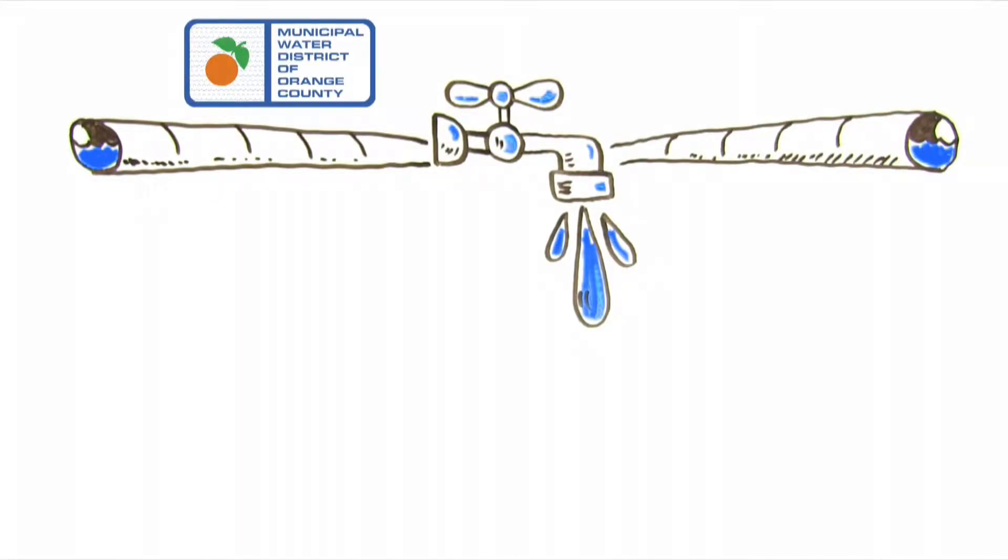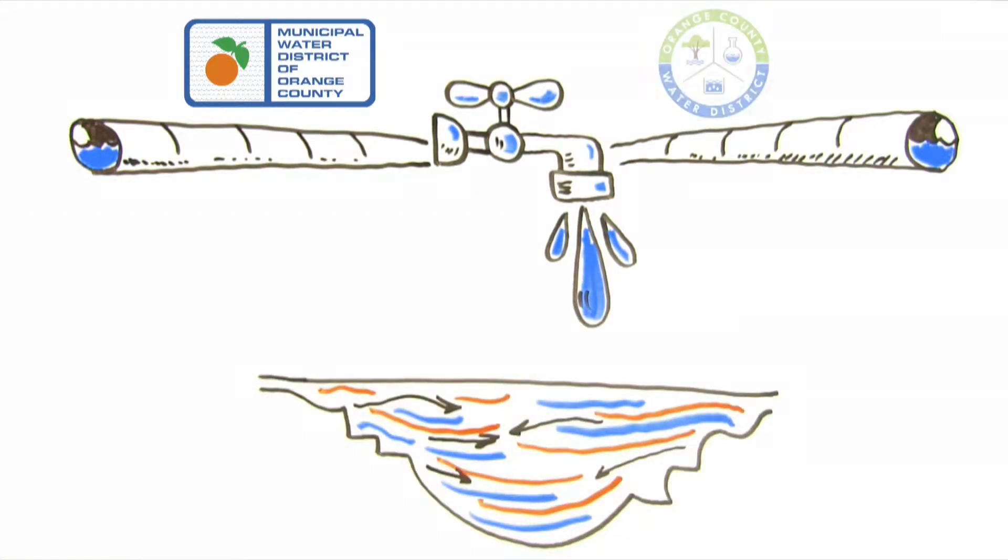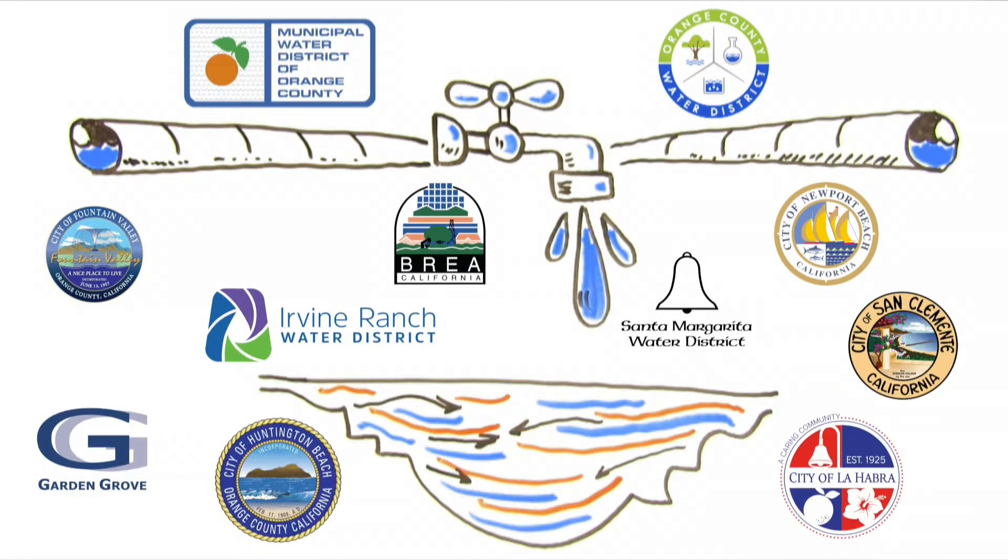The Municipal Water District of Orange County manages water that travels through hundreds of miles of aqueducts, while the Orange County Water District manages vast underground basins. Local retail agencies deliver it to your home.